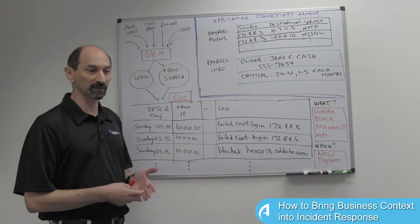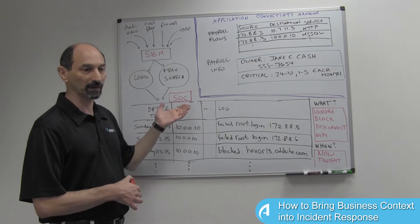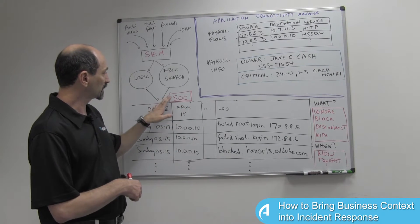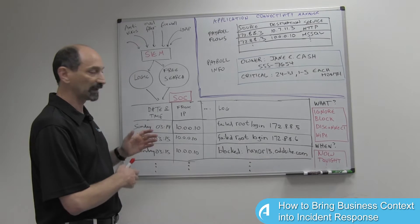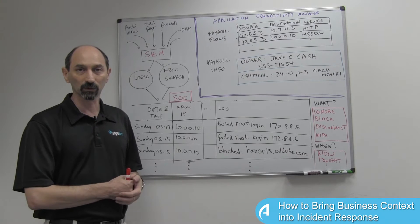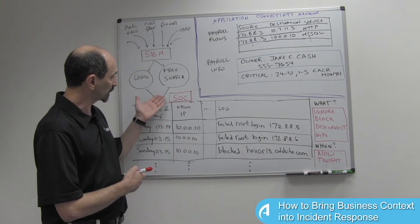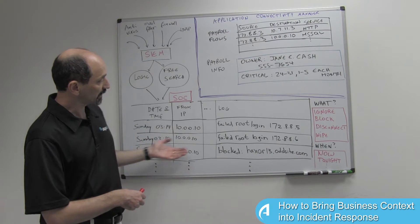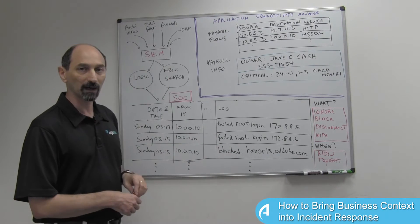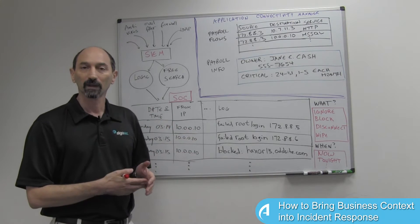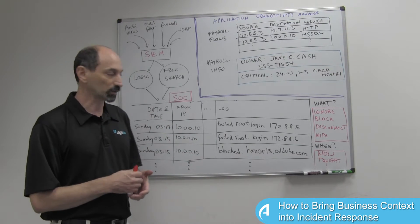When such a suspicious activity is identified either automatically or manually, a case is opened and the people in the security operations center later review this case and need to decide if it's real or not and what to do about it. The information that the people in the SOC usually see is a collection of logs like this that were found somehow in the SIEM, and all of them together indicate some kind of strange situation.